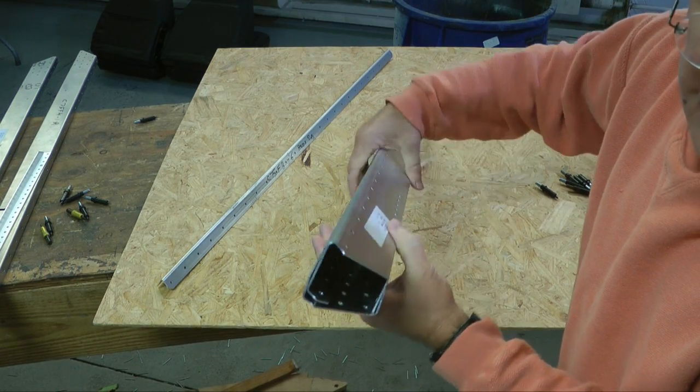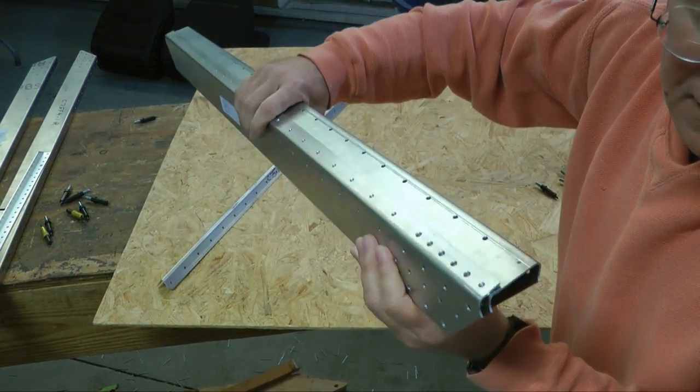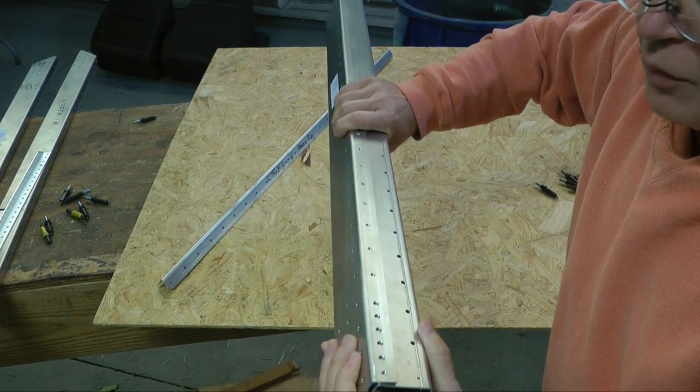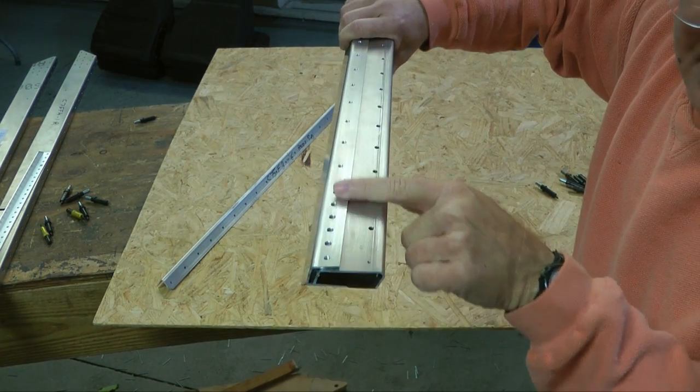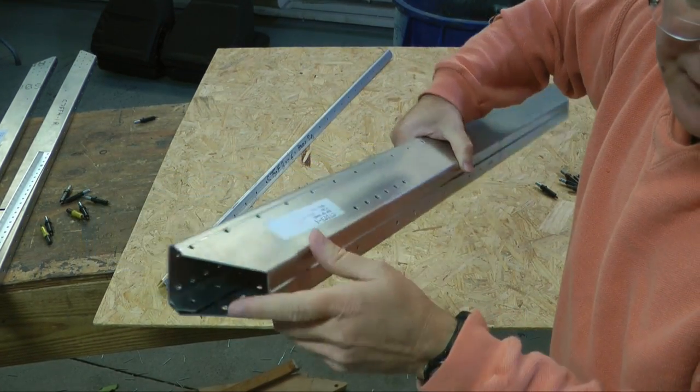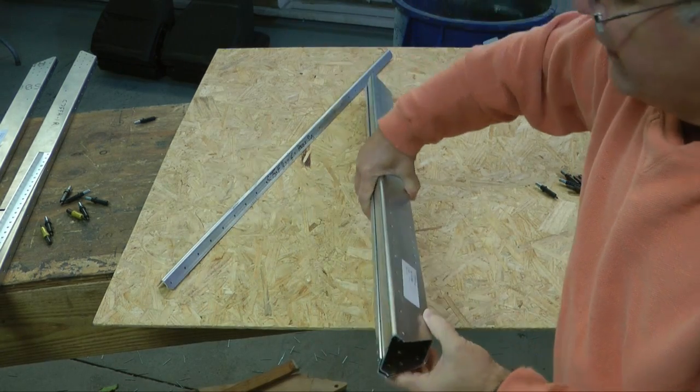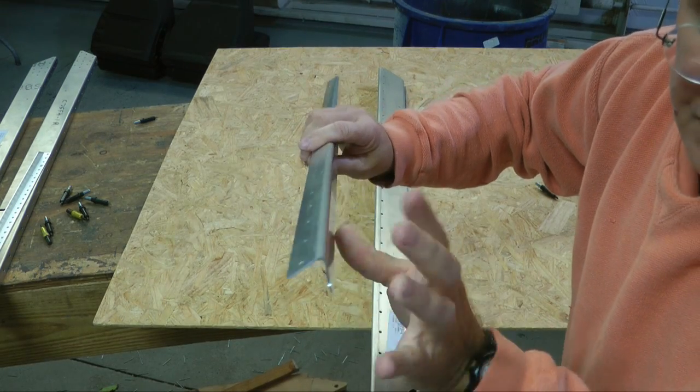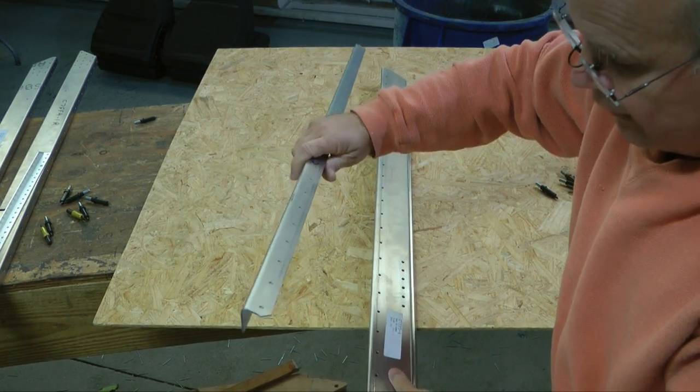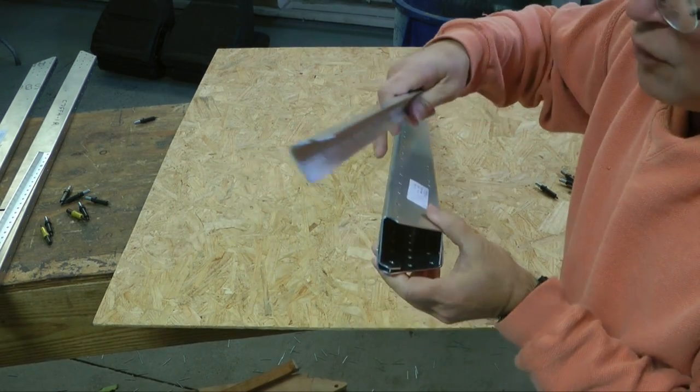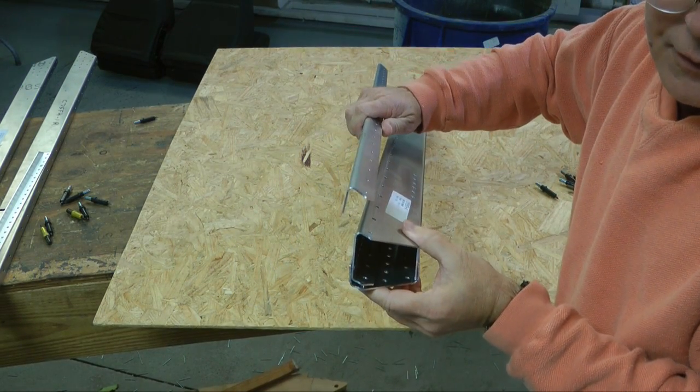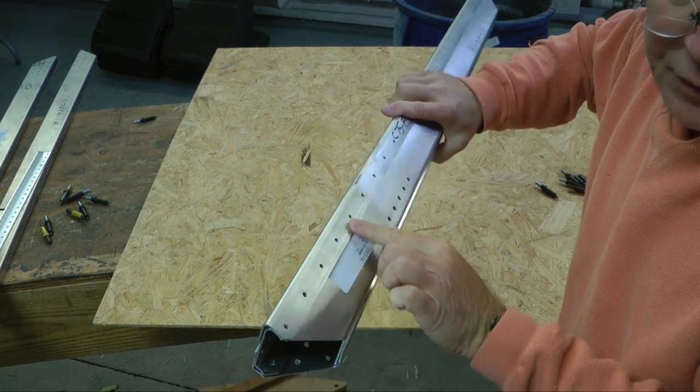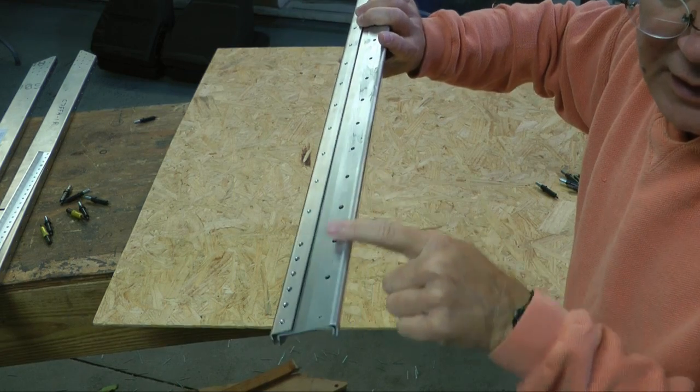And the holes will line up along the top and along the bottom. And then 3-6, which is this guy here, again a very heavy angle, will go around the corner. So this will fit right on here. And the holes will match up along the edge on both sides.